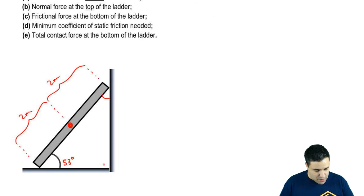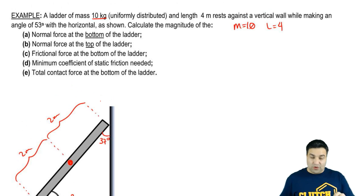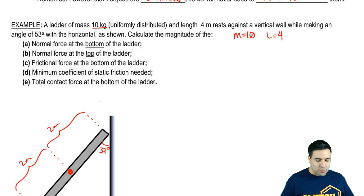The ladder has length 4. That's why I did 2 and 2. And it rests against a vertical wall while making an angle of 53 with the horizontal shown. So this is 53. This, by the way, because this is 90, this is 53. This is 90 minus 53, which is 37. So let's just put that there.